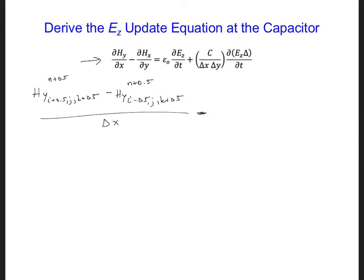And then we get Hx at i plus 0.5, j plus 0.5, k plus 0.5. Same half integer time step. This is the derivative in the y direction. So everything will be the same except now we'll have j minus 0.5, k plus 0.5. And this will be divided by delta y.